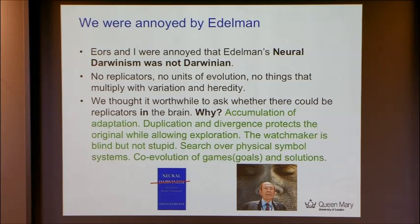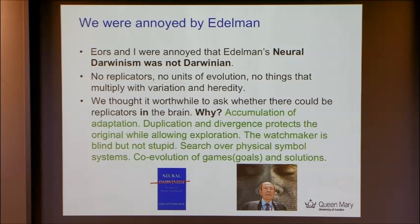We thought it worthwhile to ask whether there could be actual units of evolution in the brain. Why? Because natural selection is an algorithm that's capable of the accumulation of adaptation. Making a copy is actually useful in search, because the principle of duplication and divergence means you don't lose the original. So when you change something, you can always go back. I summarize it like this: the watchmaker is blind, but he's not stupid.